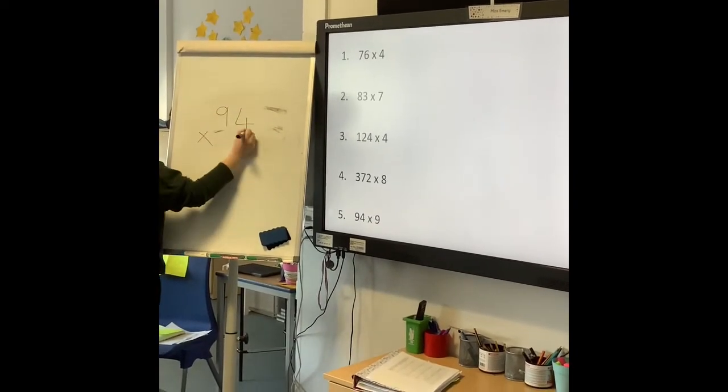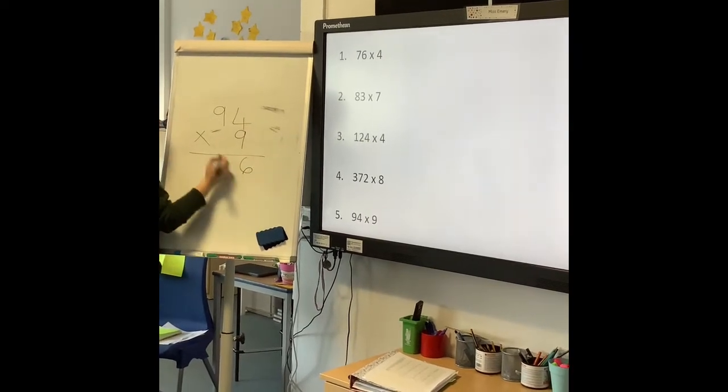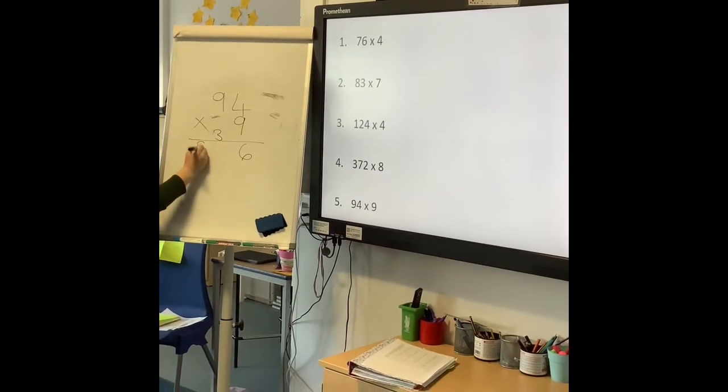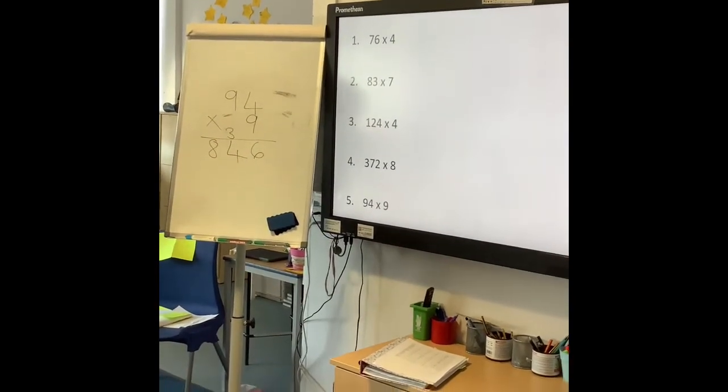Right, 94 times 9. 9 times 4 is 36, 9 times 9 is 81, which you add 3 to and you get 84. There we go. Yay! We made it! We made it through!